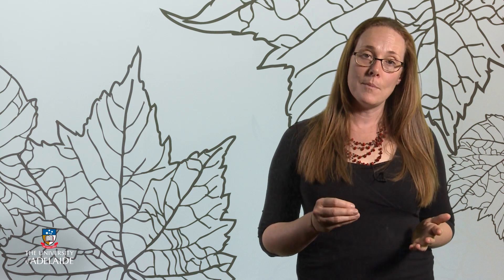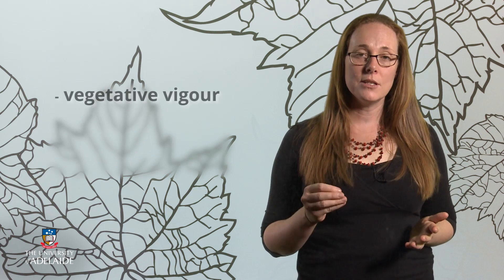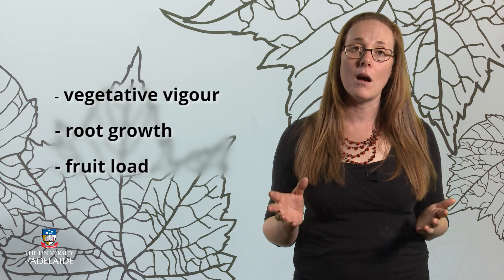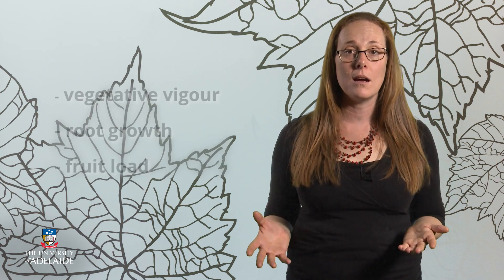Many of the practices we use in the vineyard are aimed at improving vine balance. We define vine balance as the equilibrium between vegetative vigour, root growth, and fruit load, which is consistent with high quality fruit of a targeted style. To assess vine balance, the two most common ways are to look at the ratio between yield and pruning weight, or the ratio of leaf area to fruit yield. It is also believed that these ratios give an indicator of vine balance that has a direct relationship to wine quality.